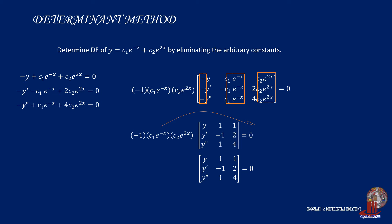At this point, we can take the matrix's determinant. Let's use Sauer's method, so compute for the positives or the downward trend of the elements, which would turn out as y times negative 1 times 4 plus 1 times 2 times y double prime plus 1 times 1 times y prime. Then compute the opposite trend, which is taken as the negatives: y double prime times 1 times negative 1 plus y times 1 times 2 plus 1 times y prime times 4. These would all be equated to zero.